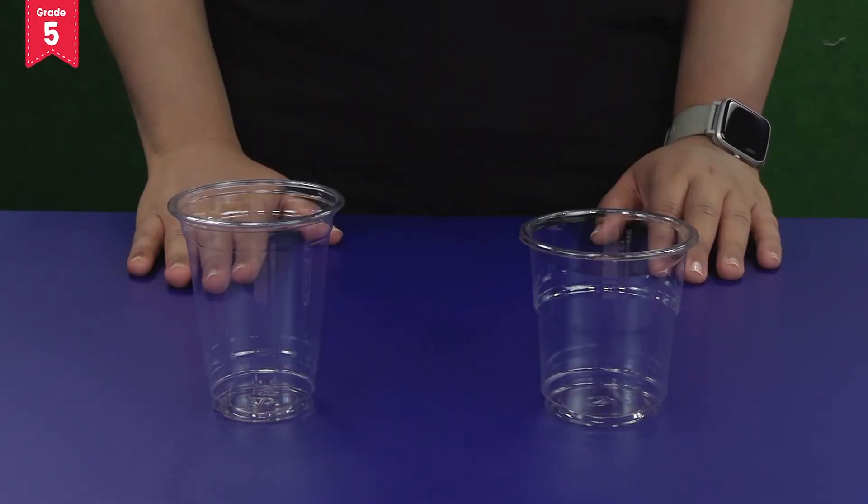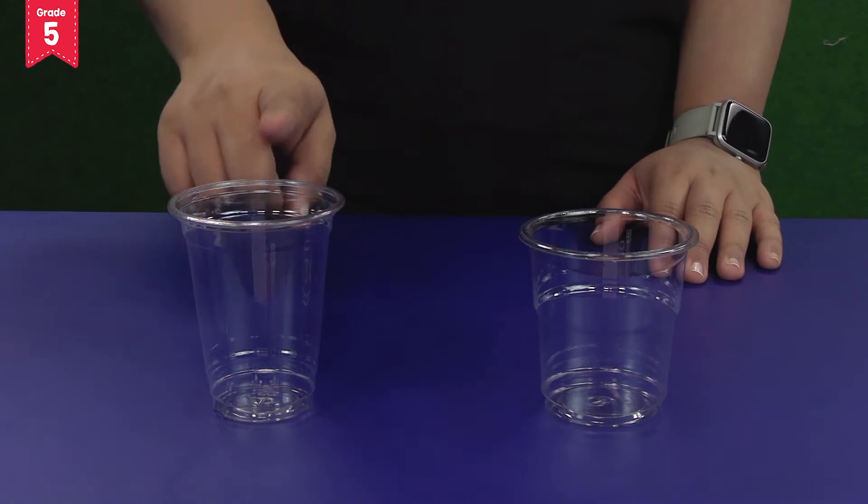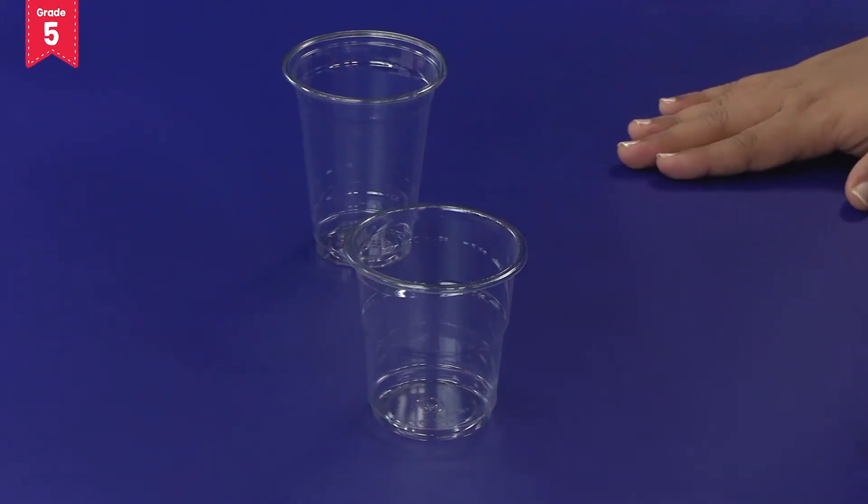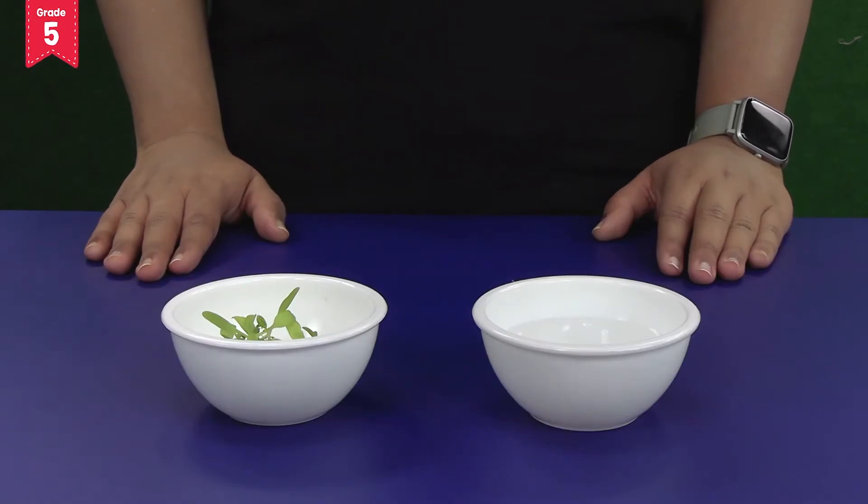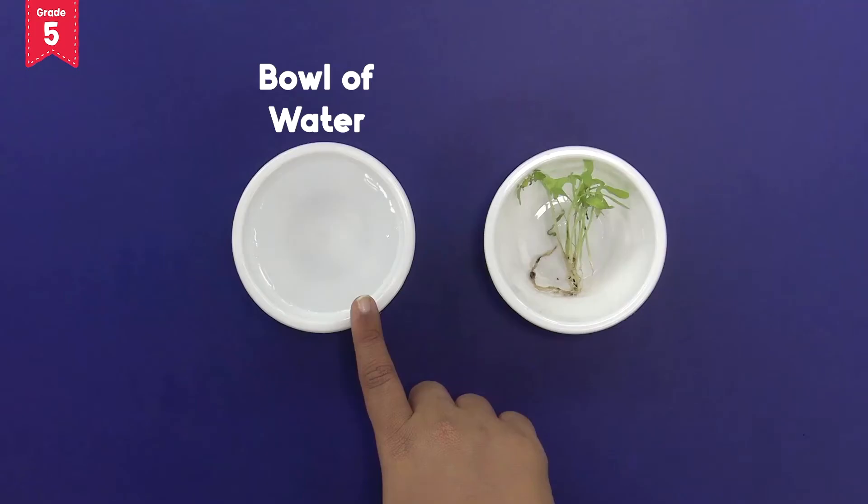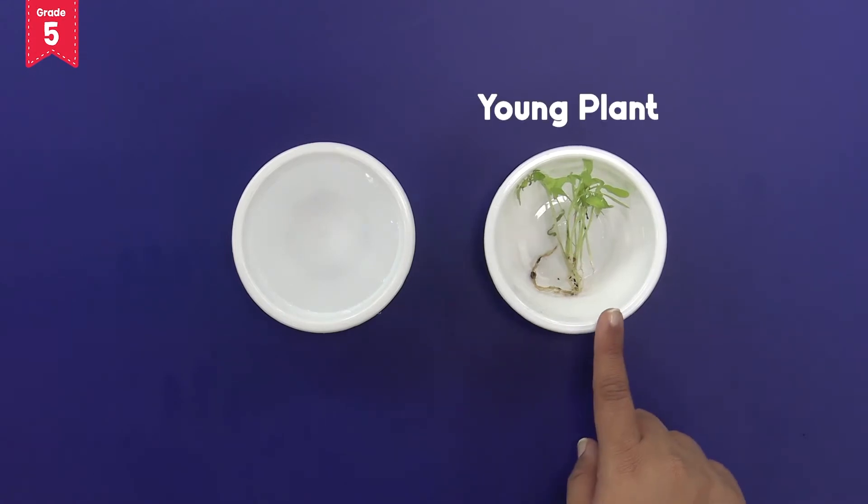Your smart box contains two types of disposable glasses. You need to use the bigger one for this activity. You will also need a bowl of water from your home and a young plant from the seed germination activity.